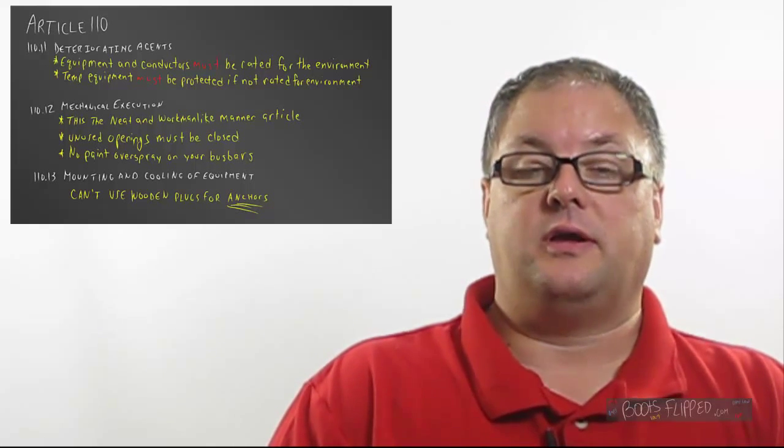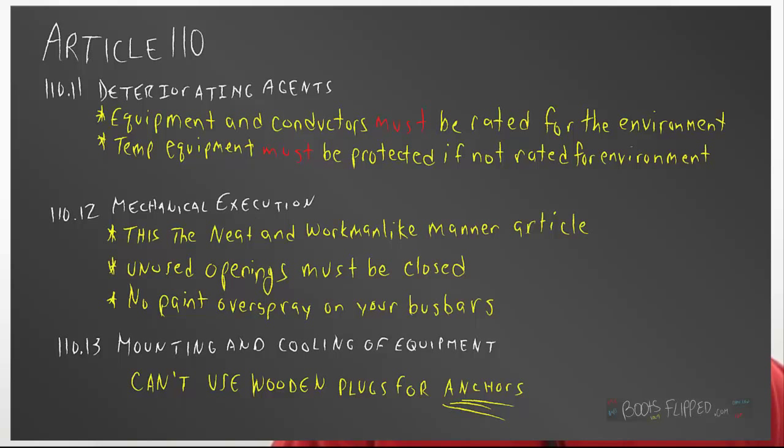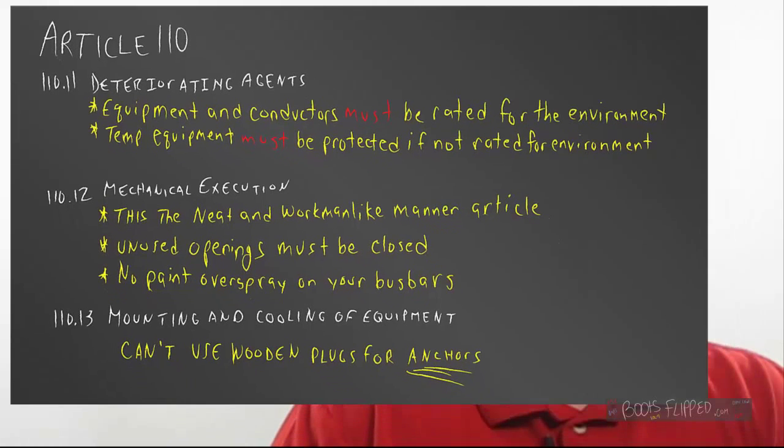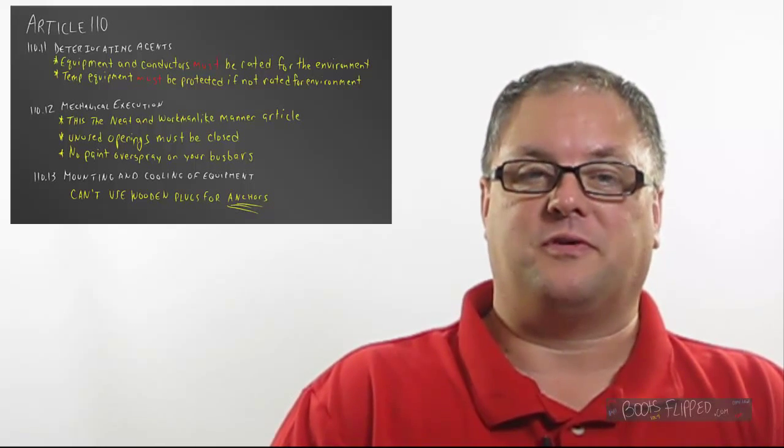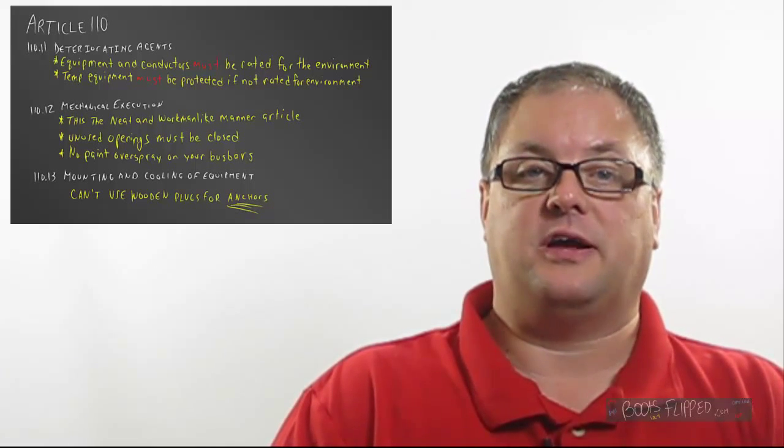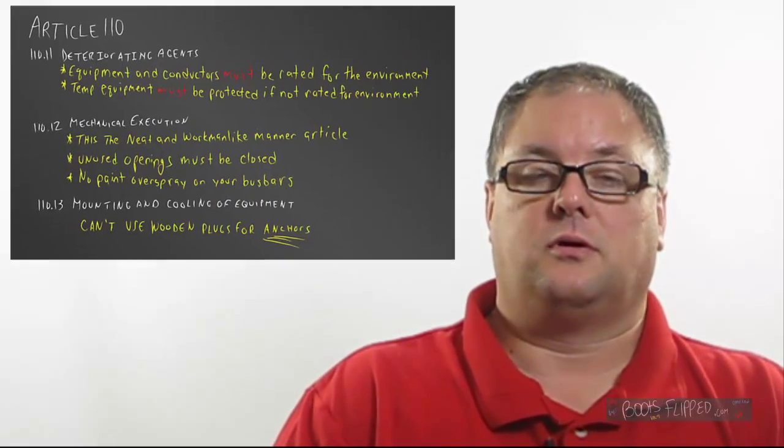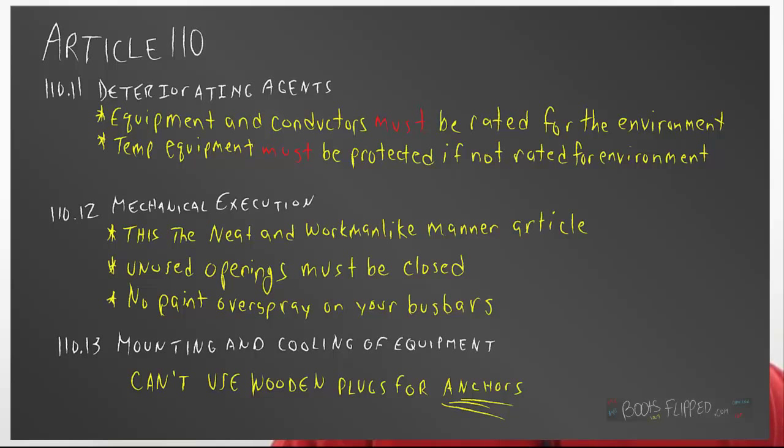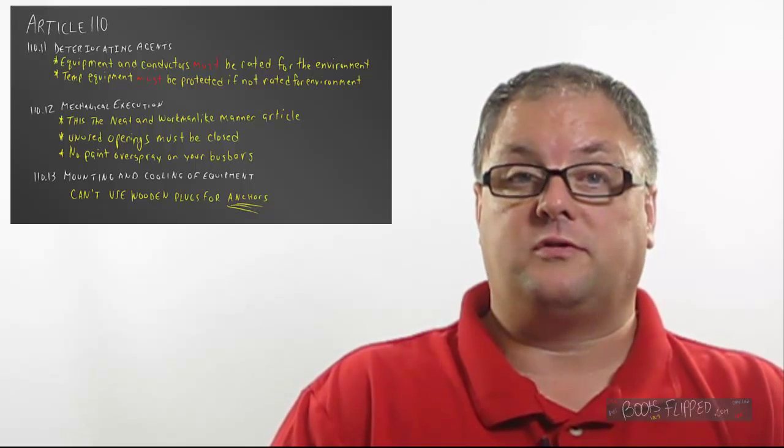Article 110.12 is an article that I believe one of you in class has already brought this up, but neat and workmanlike manner. Yeah, we have to make it look good. You know, your definition of good and my definition of good, I'm sure, are probably different. But it can't be a mess. And so an inspector could actually come into your job site and tell you that you've got to change it because you don't like the way it looks. Another thing that we have to do is we have to cover the unused openings. Yeah, that means if you're dealing with metal boxes and you take a knockout out, if you don't have another box to replace it, you have to use a knockout filler. By code, Article 110.12.